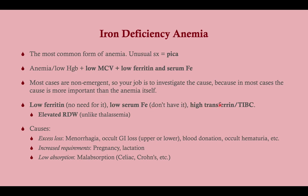In iron deficiency, low ferritin reflects low iron stores, low serum iron because you simply don't have it, and a high transferrin and TIBC as a futile attempt to increase iron. An elevated red blood cell distribution width separates iron deficiency from the thalassemias. Causes include excess loss such as menorrhagia and occult GI loss, which can be quickly diagnosed with a fecal occult blood test. Iron deficiency from pregnancy or lactation is less common, and low absorption from celiac or Crohn's is also a possibility.